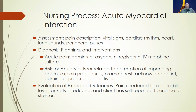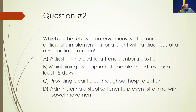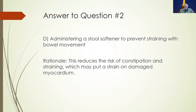Question two: which intervention will the nurse anticipate for a client with myocardial infarction? A: Adjust the bed to Trendelenburg position. B: Maintain complete bed rest for at least five days. C: Provide clear fluids throughout hospitalization. D: Administer a stool softener to prevent straining during bowel movements. The answer is D — administering a stool softener to prevent straining with bowel movements, which reduces the risk of constipation and additional strain or damage to the myocardium.